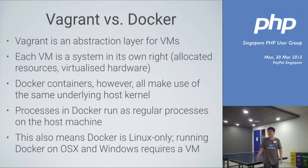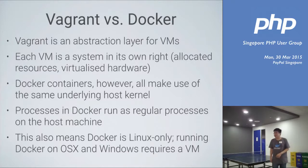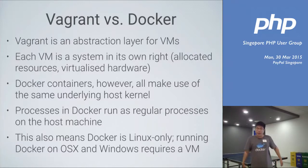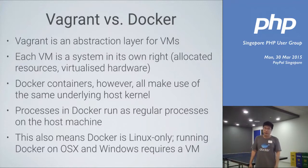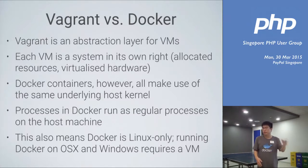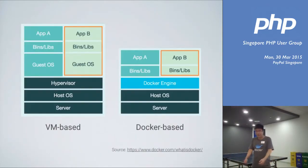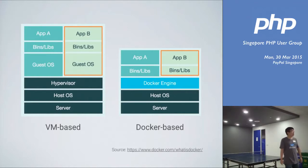Most of you will be more familiar with Vagrant, which many people use when developing on OS X. Vagrant is an abstraction layer for virtual machines — the underlay is VirtualBox, but it also has provider adapters for things like AWS machines. Each VM is a system in its own right with allocated resources and virtualized hardware. Docker containers are one level higher — they all make use of the same underlying host kernel, meaning they run as regular processes on the host machine, just isolated from each other. This also implies that Docker is Linux-only currently. Running Docker on OS X and Windows requires a virtual machine. If you use Boot2Docker, for example, it uses VirtualBox. Docker basically uses normal processes on the machine itself rather than a hypervisor.